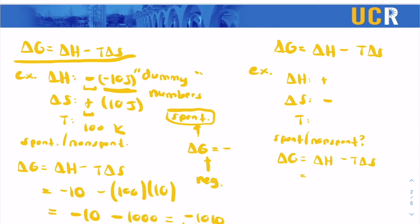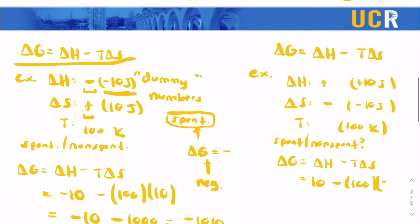So delta H is positive, let's just use positive 10 joules. Delta S negative, let's use negative 10 joules. And for temperature, let's just use easy number, 100 Kelvin. So we just plug these values into our equation. So we have 10 minus the temperature 100 times the entropy negative 10.